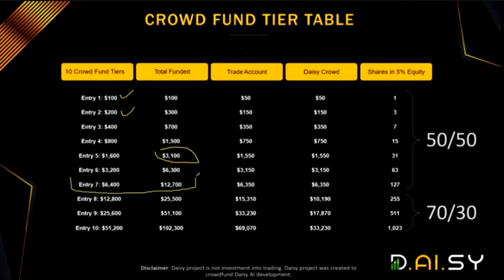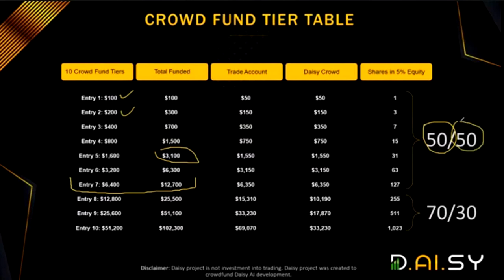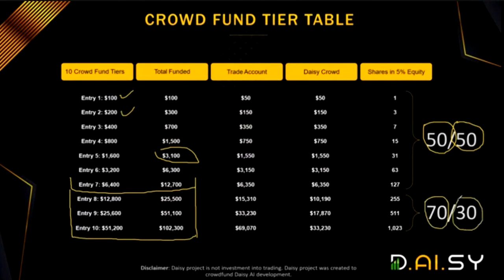You first buy the $100 package, then the $200 package, and so on. By the time you have purchased all seven packs, you will have spent $12,700. On the first seven packs — tier one to seven — 50% will go into crowdfunding into Daisy Crowd, and 50% will go into Daisy Fund, which is the AI trading part. On packages eight to ten, 70% will go into Daisy Fund and 30% will go into Daisy Crowd.